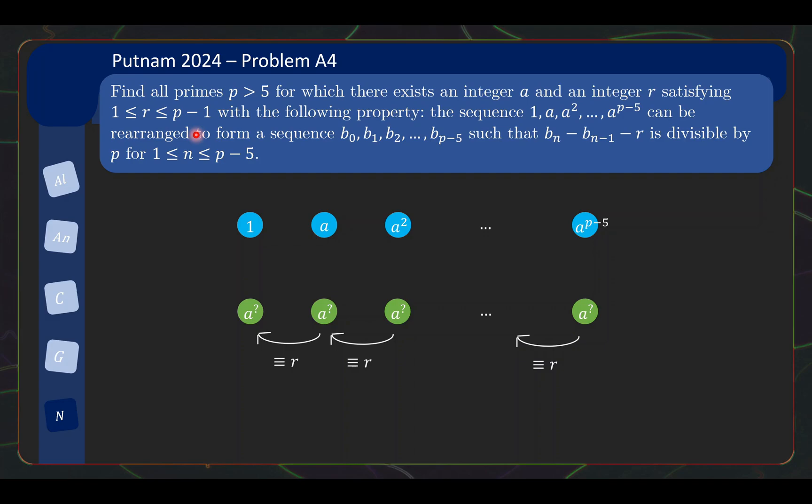Basically the problem is you need to find all primes p such that you can find some powers of a like this up to p-5 such that you can rearrange them to have consecutive differences having the same remainder under mod p. So hopefully that is clear enough after the rephrasing. Let us now take a look at the solution.